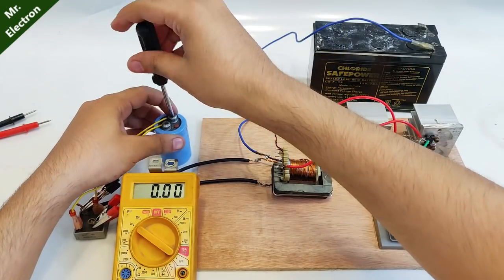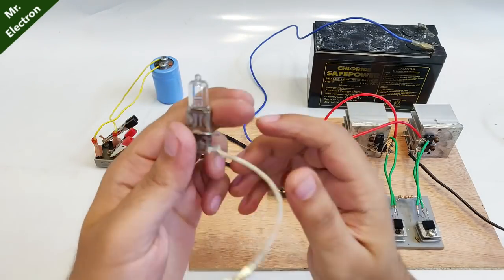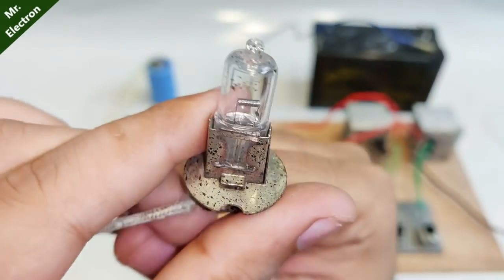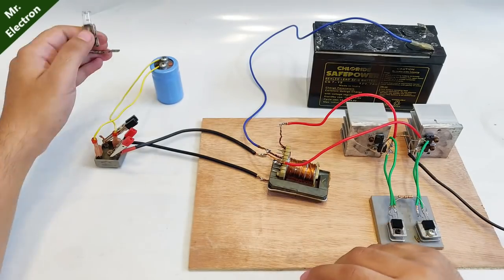Capacitor connected. Time to start the test. First comes the current testing. I have a car headlamp bulb, this is a 55 watts bulb, 12 volts 55 watts. Let's do the testing with this one.